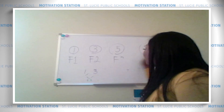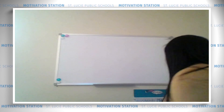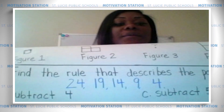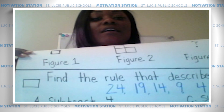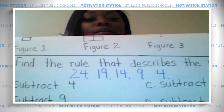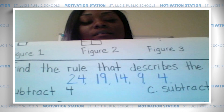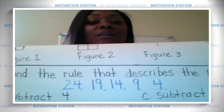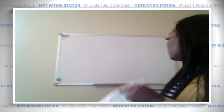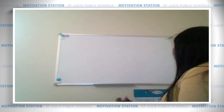Let's try one more problem. The next problem says find the rule that describes the pattern: 24, 19, 14, 9, 4. Wow, these numbers are shrinking — they're decreasing. Let's write this up on the board so we can make it large enough to see. Make sure you're writing this down.